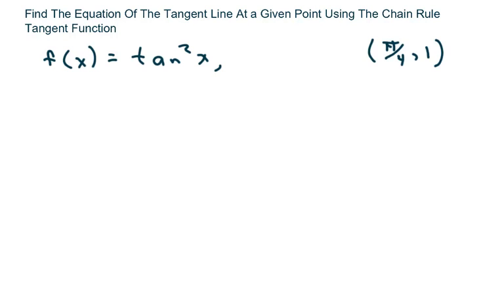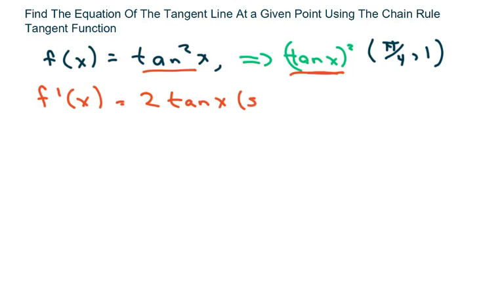The first thing I want to do is rewrite this as tan of x squared. It's the same as that, just a different way to write it. So now I'm going to take the derivative using the chain rule. It's going to be 2 tan of x, and then multiply it by the inner function, which is secant squared of x.